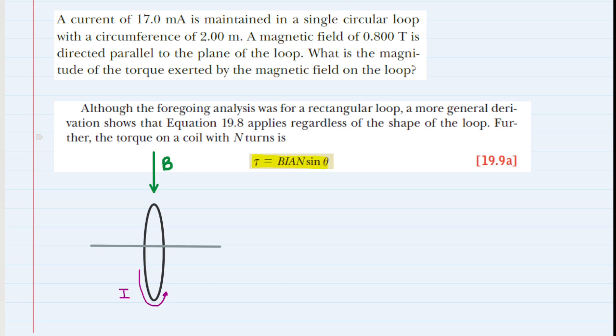That torque is calculated according to this expression given here. There's a lot of information packed into that expression, so let's break it down. We begin with B, which is the magnitude of the magnetic field. That was given in the problem to be 0.8 tesla.